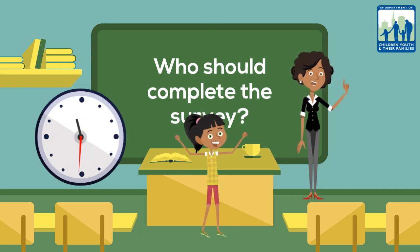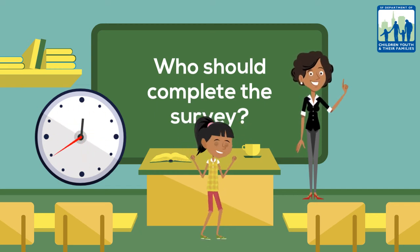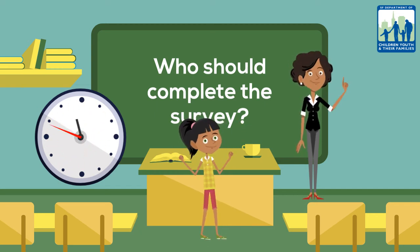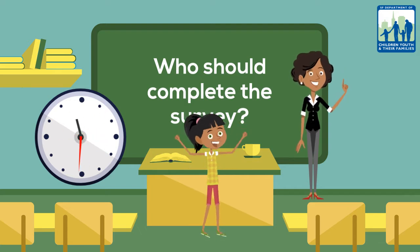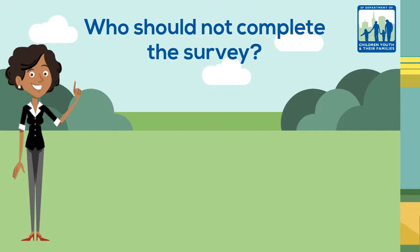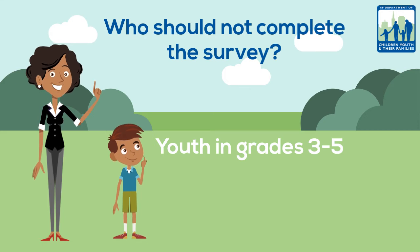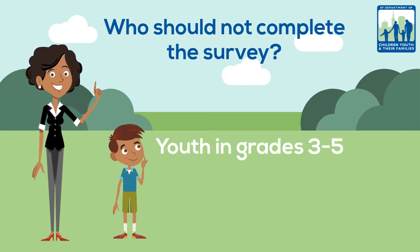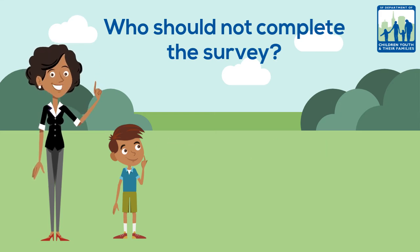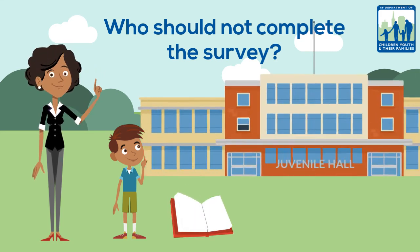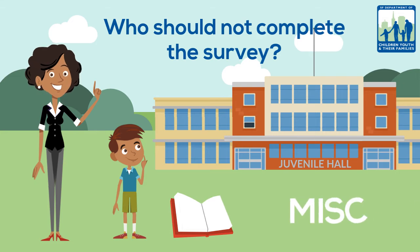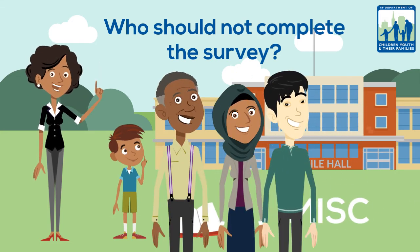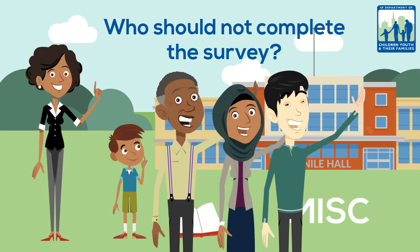This ensures that those who are completing the survey have had sufficient time in your program to speak to their general experience. Those in grades 3 to 5 should not complete the survey, since the surveys are for youth with at least a middle school reading comprehension level. Program participants in literacy sports, detention-based, and miscellaneous programs should not complete the survey. Parents or guardians should not complete the survey on behalf of their children either.